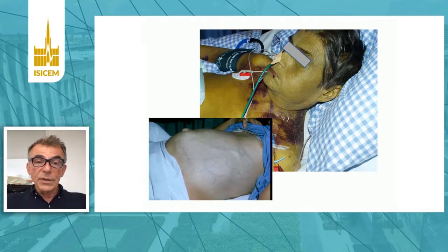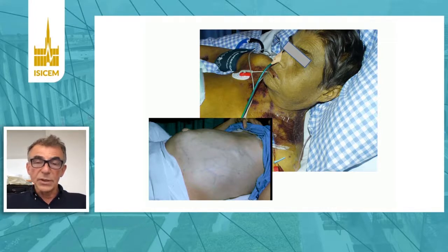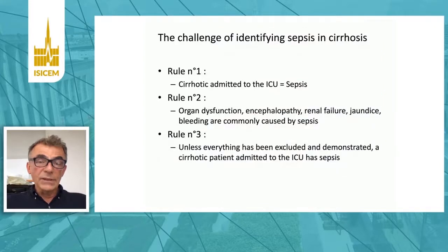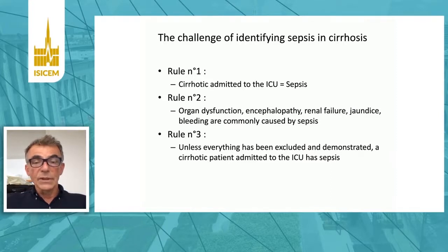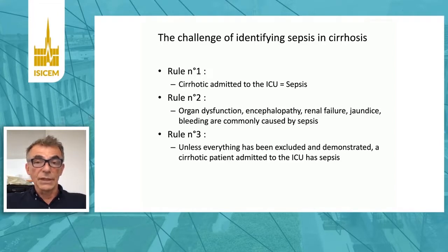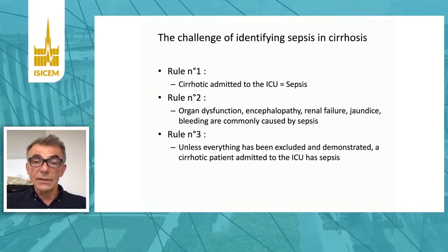Taking care of this patient is quite common, but when admitted with jaundice, acute renal failure, and encephalopathy, the concern is always the same: does this patient present with sepsis? The proposal for daily practice is as follows. Rule number one: a patient with cirrhosis admitted to the ICU has sepsis. Rule number two: any organ dysfunction, including encephalopathy, renal failure, jaundice, and even bleeding, is commonly caused by sepsis. Rule number three: unless everything has been excluded and demonstrated otherwise, a cirrhotic patient admitted to the ICU has sepsis.